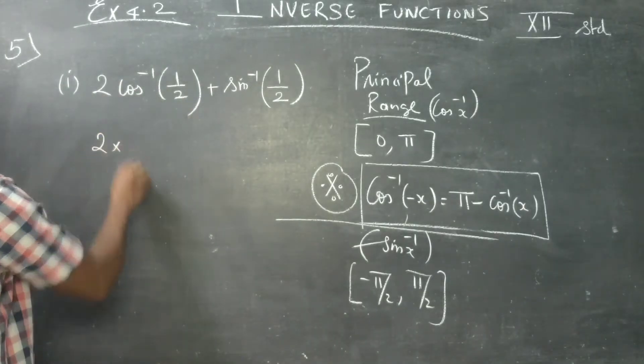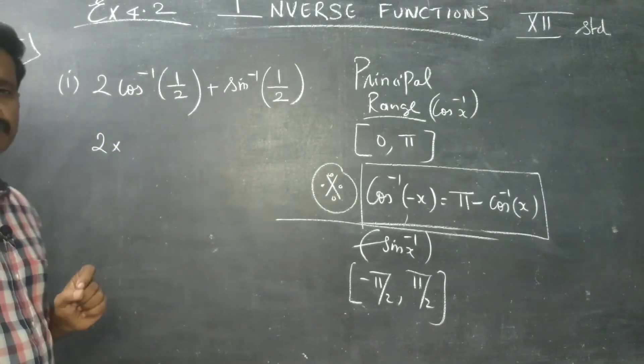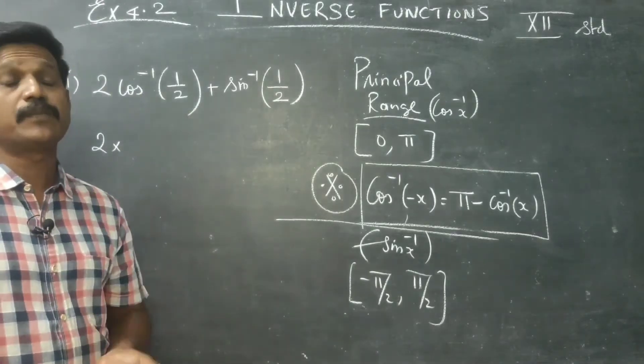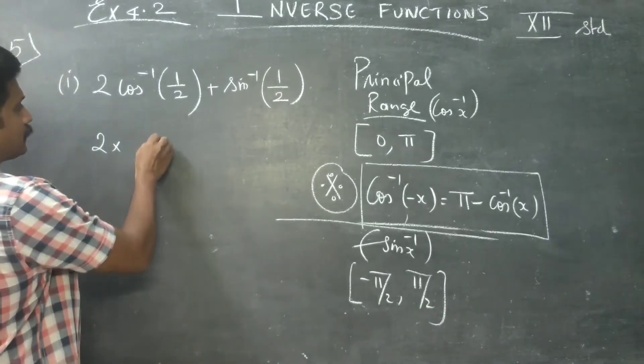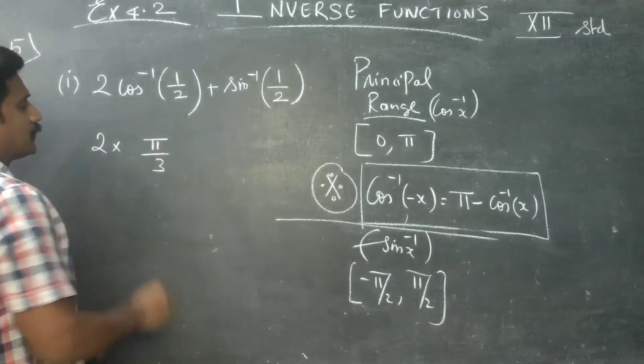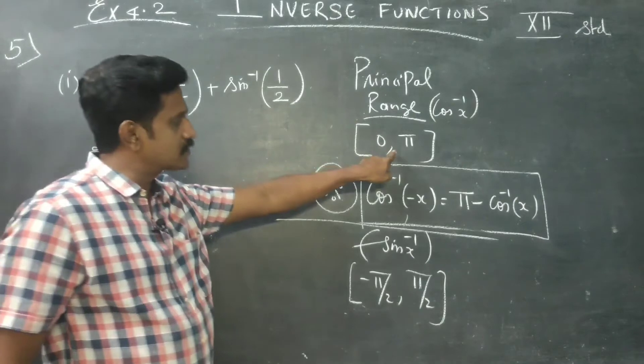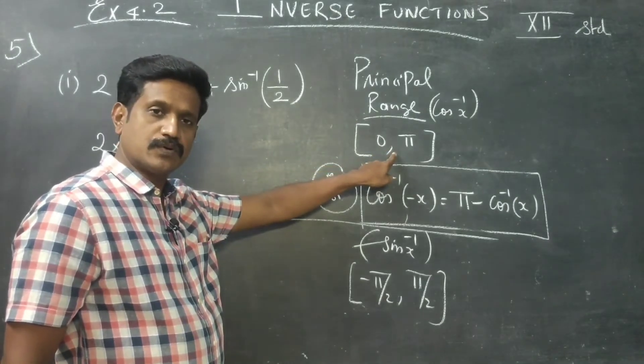Now simplifying this, 2 into 1 by 2, cos inverse 1 by 2 is 60 degrees. 60 degrees is pi by 3. Pi by 3 belongs to 0 to pi.